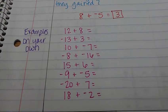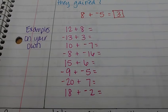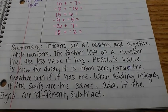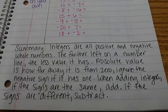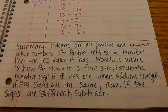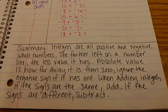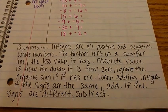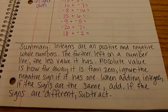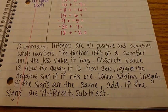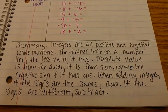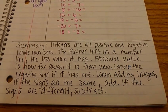And every set of notes we summarize. I will start off giving you the summary, but later on you're going to be expected to do it on your own. So our summary is integers are all positive and negative whole numbers. The farther left on a number line, the less value it has. Absolute value is how far away it is from zero. Basically ignore the negative sign if it has one. When adding integers, if the signs are the same, add. If the signs are different, subtract.